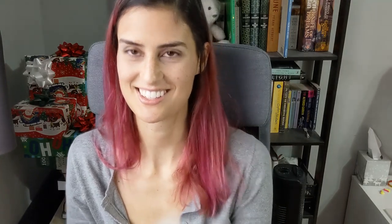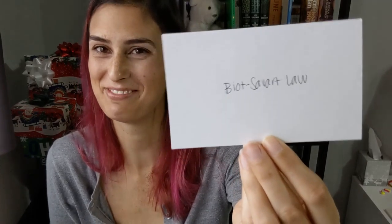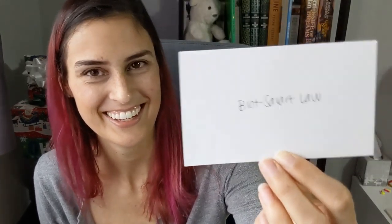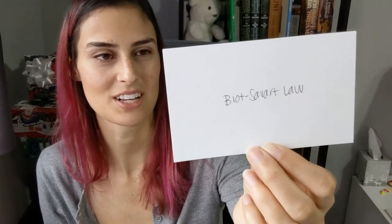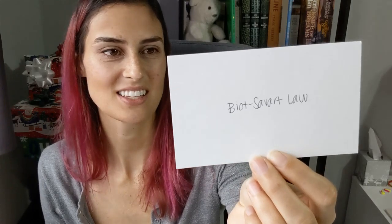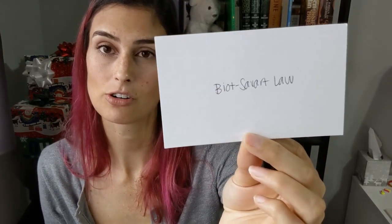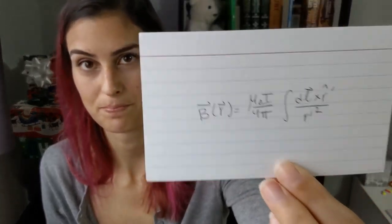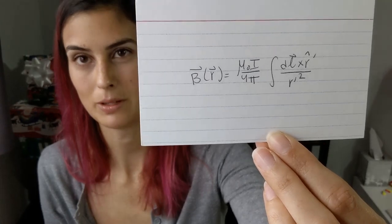The Biot-Savart law — hard to pronounce, possibly mispronounced here: B of r equals mu naught I over 4 pi times the integral of dl cross r-prime r-hat-prime over r-prime squared. This was always a hard one to remember.